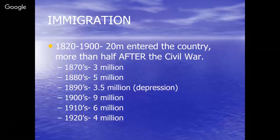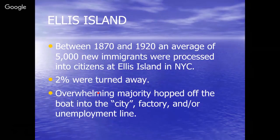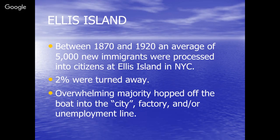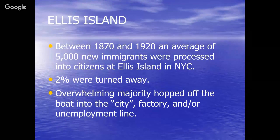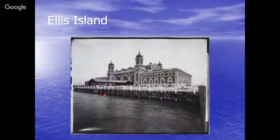Immigration waves show a bit of a drop in the 1890s during the economic depression, but picked back up afterward. Between 1870 and 1920, an average of 5,000 new immigrants a day were processed through Ellis Island. Two percent were turned away — usually political radicals or people with diseases. The US government has consistently closed the door to those who are sick. The overwhelming majority hopped off the boat and went right into the city, right into the factory, or right into the unemployment line.